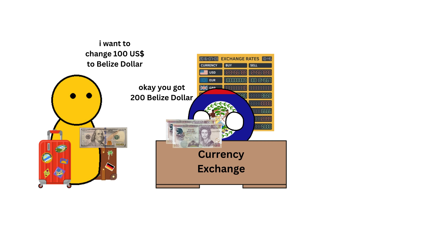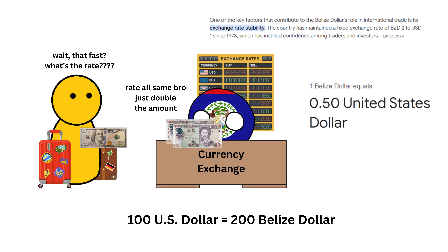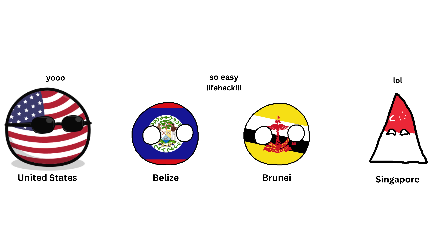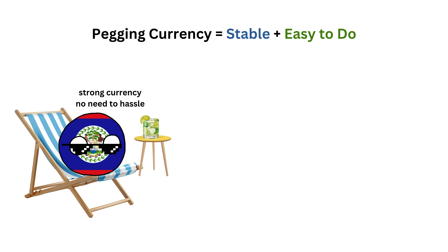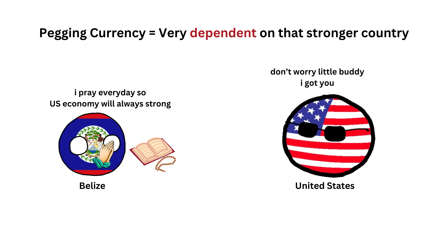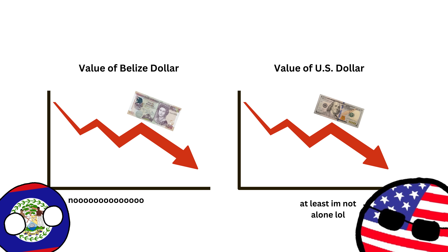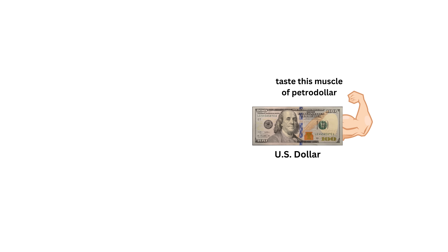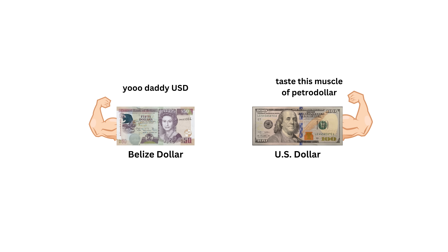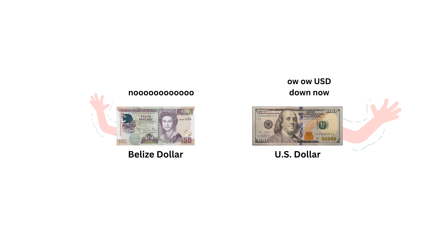So, if you want to change your U.S. dollar to Belize dollar, you don't need to check the exchange rate — just double the amount. It's so easy, isn't it? Pegging a currency makes it stable and easy to manage, but the country becomes very dependent on the stronger country's economy. If the U.S. dollar falls, the Belize dollar will fall too. So, if one currency lives, the other lives. If one dies, the other dies.